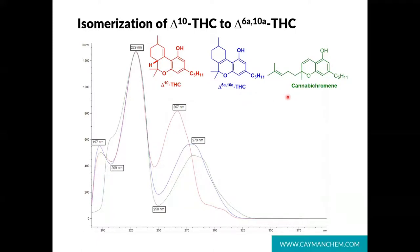I have seen reports that delta-10 and delta-6A-10A isomers are being misidentified as cannabichromene, or CBC. As you can see, there are similar UV profiles in this comparison of spectra for delta-10 in red, delta-6A-10A in blue, and CBC in green.